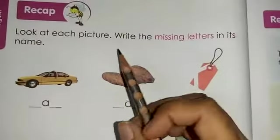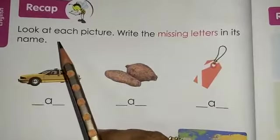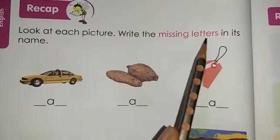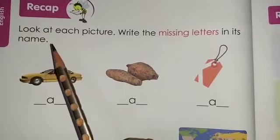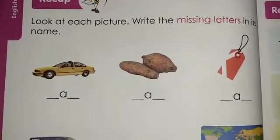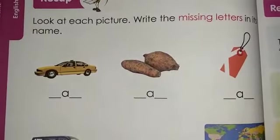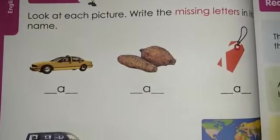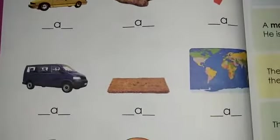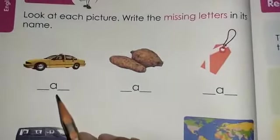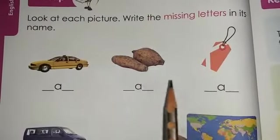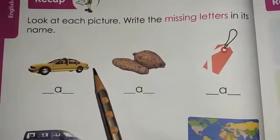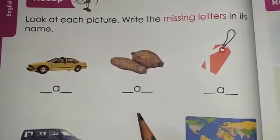On page number 26, we have been given an exercise. Look at each picture and write the missing letters in its name. So what do we have to do in this? Till now we have studied a lot of words and we have identified pictures also. Over here, you have been given a lot of pictures but there are missing letters and you are supposed to fill them. You will first identify the picture and then write down the missing letter.